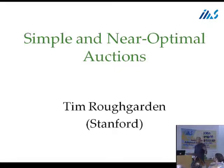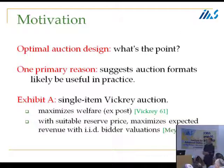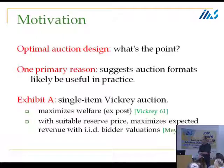Easy to see, and nonetheless, despite the simplicity, there should be some rigorous sense in which you can prove worst-case bounds on their performance relative to perhaps very complicated auctions. I wrote this slide before the panel discussion on Tuesday, but it's quite relevant. Why do we do what we do in optimal auction design?